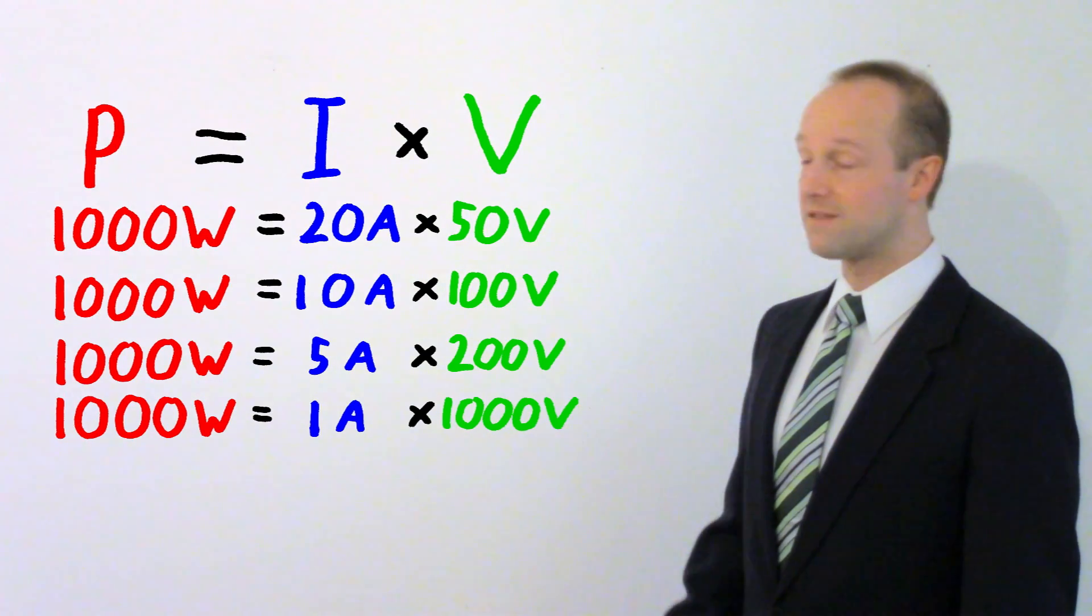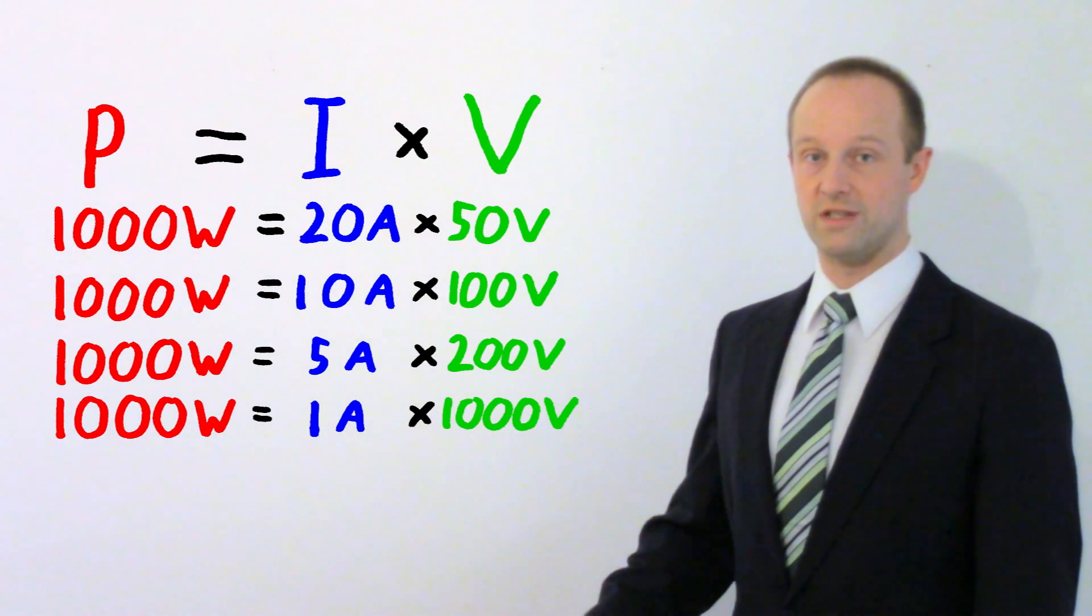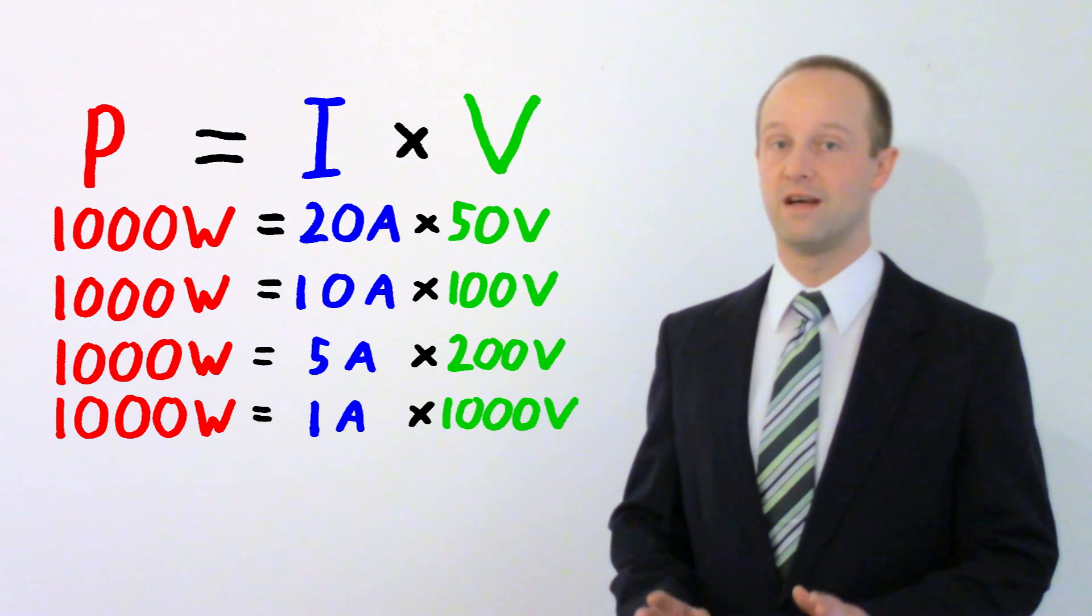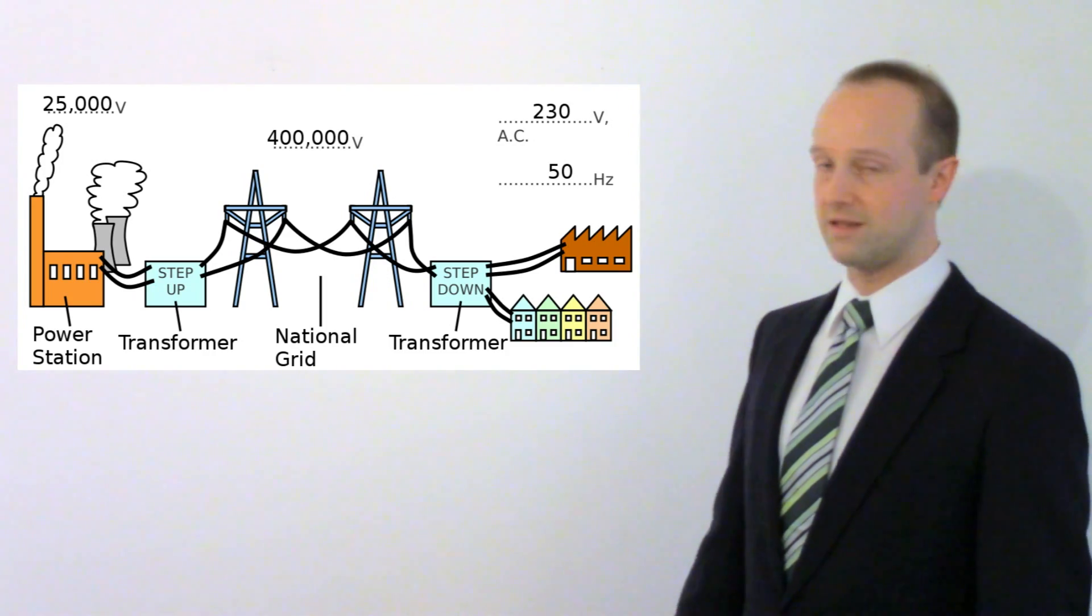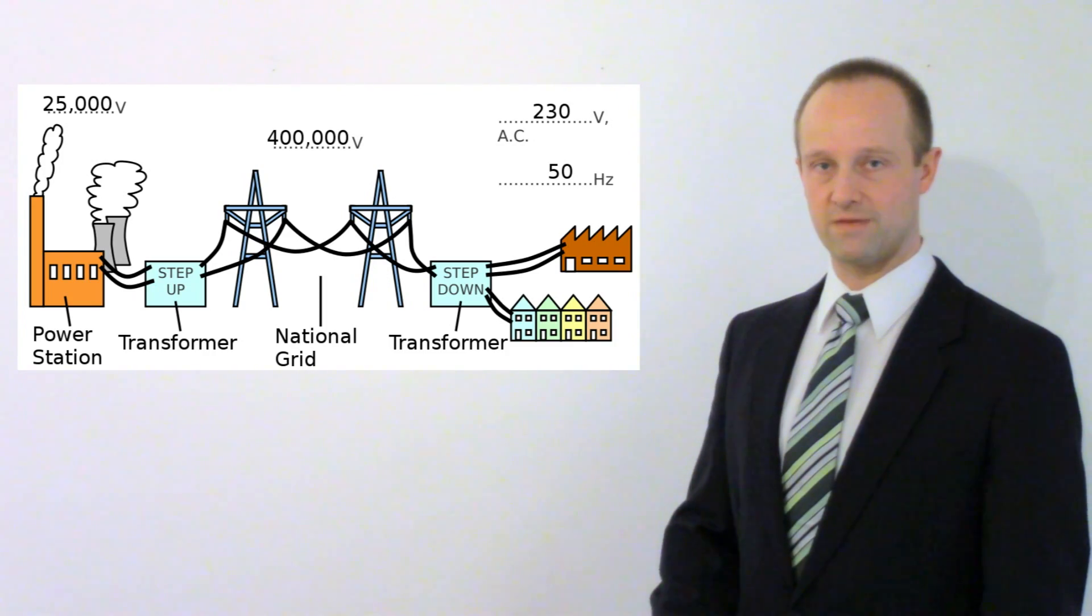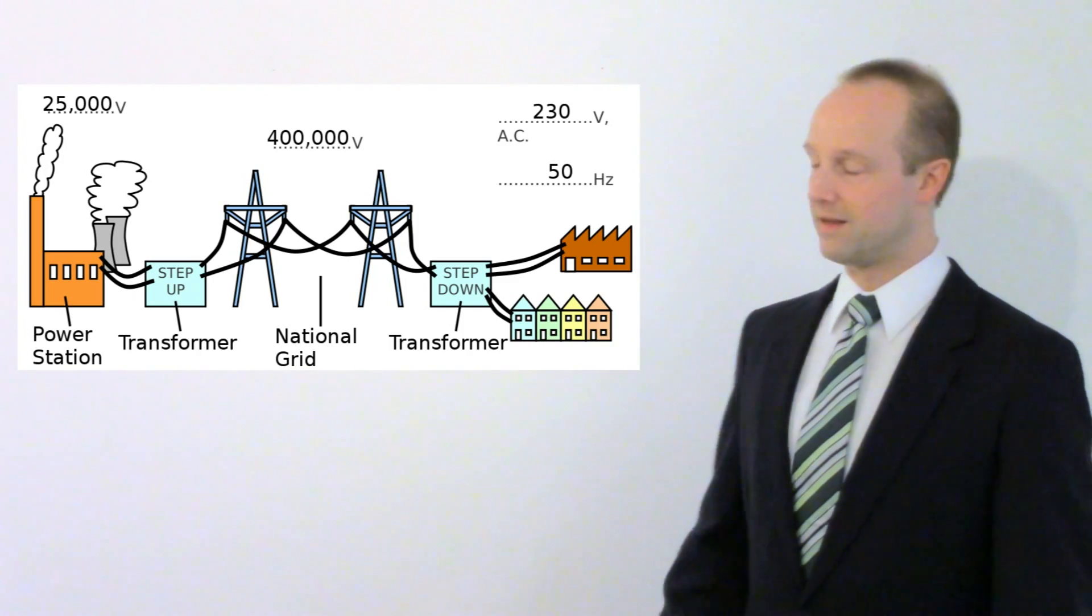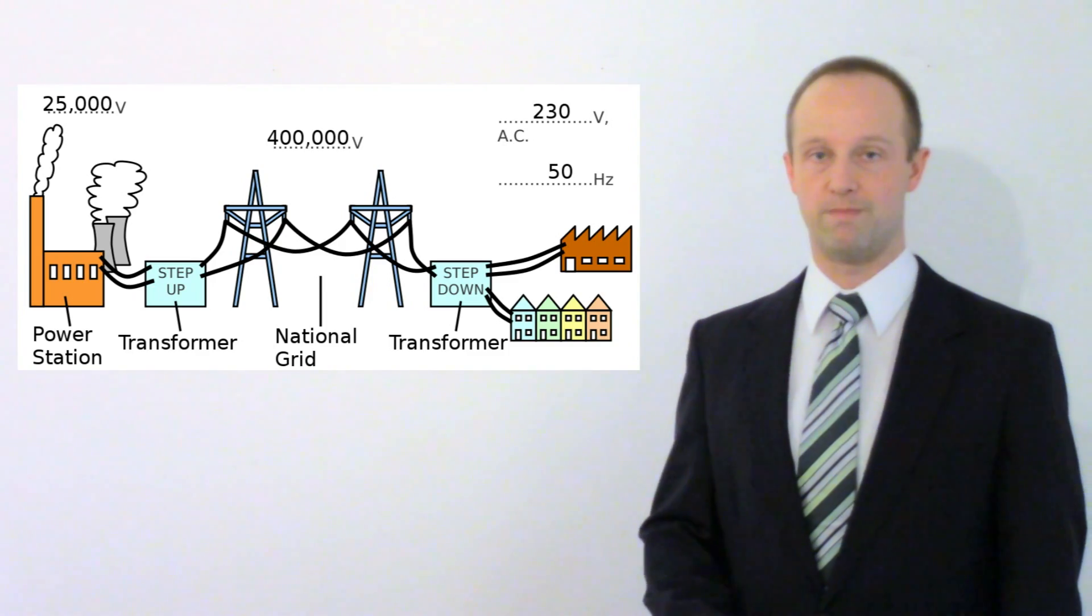So the transformer increases the potential difference and reduces the current at the same time. And so it wastes far less energy when you're distributing the electricity. And again at the other end we need to step it back down to a safe level to use in our homes. And so the opposite process takes place. The potential difference coming back out is much smaller and so the current is much bigger.